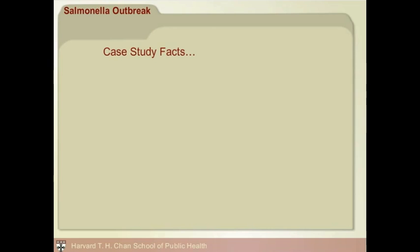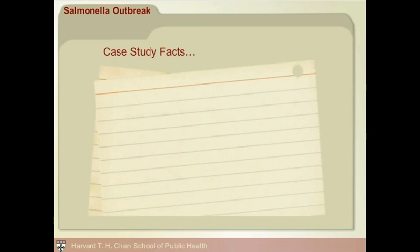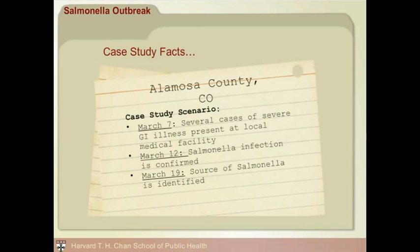It can sometimes be difficult to distinguish between a root cause and an intermediate cause. Let's look at a case from start to finish to see how we can hone in on root causes. We'll examine a salmonella outbreak in Alamosa, Colorado. On March 7, several cases of severe gastrointestinal illness presented at the local medical facility. By March 12, these cases were confirmed as salmonella. On March 19, the source of the salmonella infection was identified. The information is from an actual outbreak, but do your best to think through the facts with us.